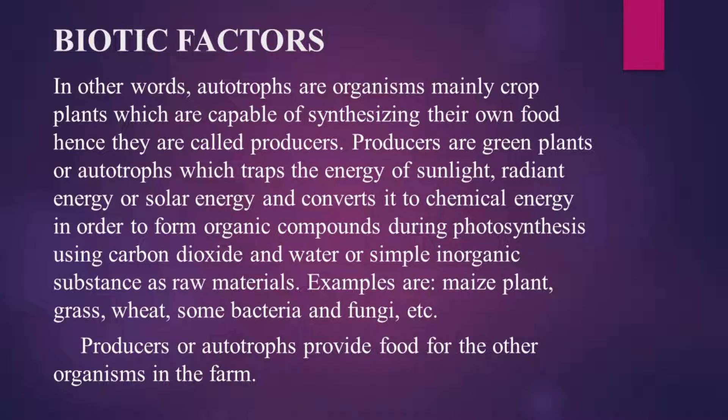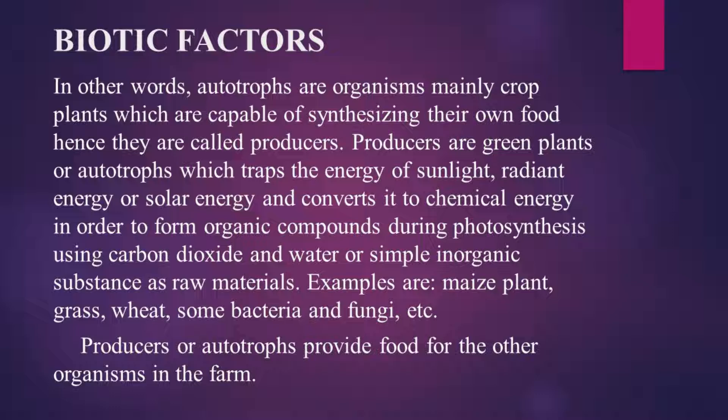Autotrophs are organisms — mainly crop plants — which are capable of synthesizing their own food, and they are called the producers. They produce their own food and are mostly crop plants. Producers are green plants or autotrophs which trap the energy of sunlight — radiant energy or solar energy — and convert it to chemical energy.